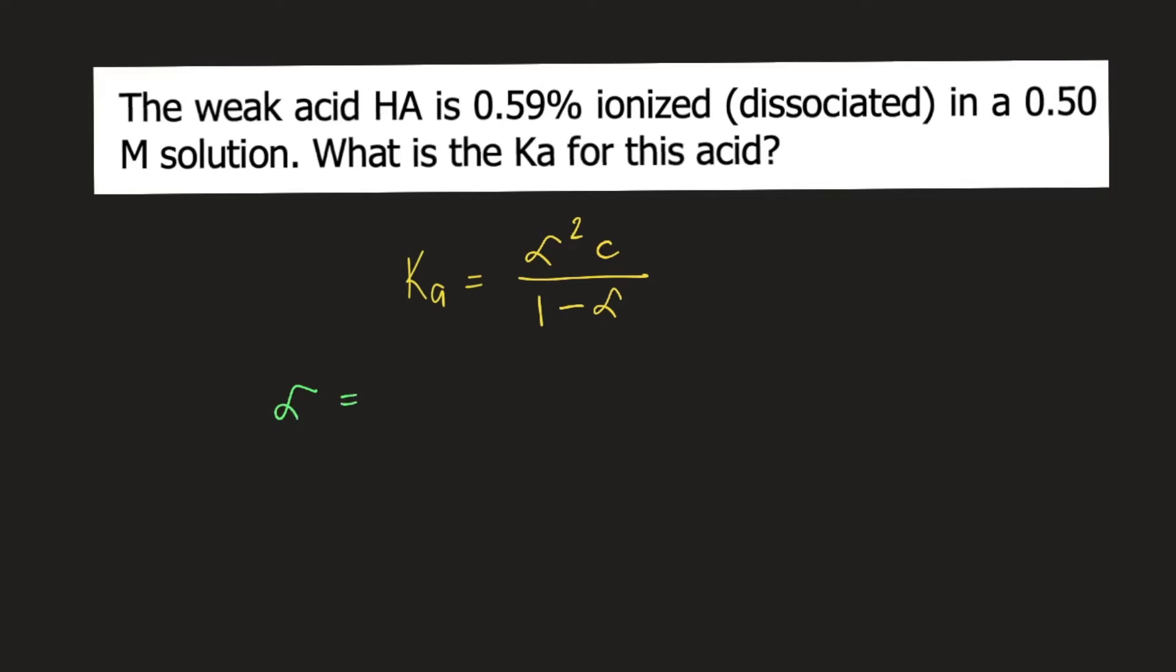Alpha is fraction ionized, equal to percent ionization divided by 100. In our problem, percent ionization is 0.59 divided by 100, which equals 0.0059.